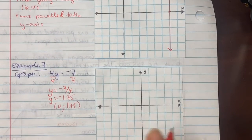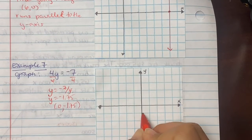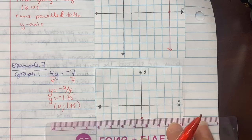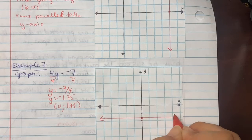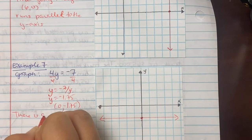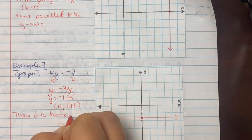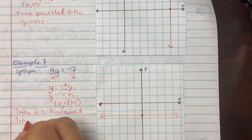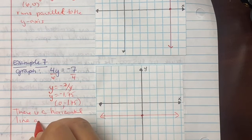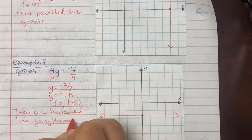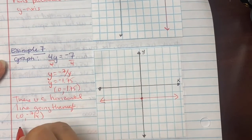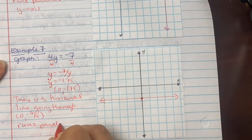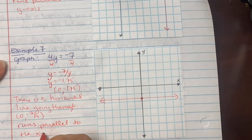So on the y-axis, here's the -1, here's my -2. So we're closer to the -2, putting a line, and we're running horizontally. So there is a horizontal line going through (0, -7/4). It runs parallel to the x-axis.